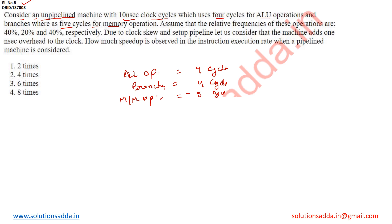Assume that the relative frequencies of these operations are 40%, 20%, and 40% respectively. So we can write 0.4. Then 4 cycles for ALU operation multiplied by 0.4 gives us 1.6.